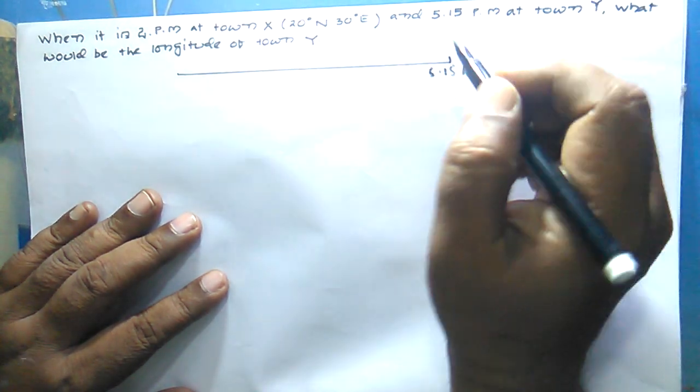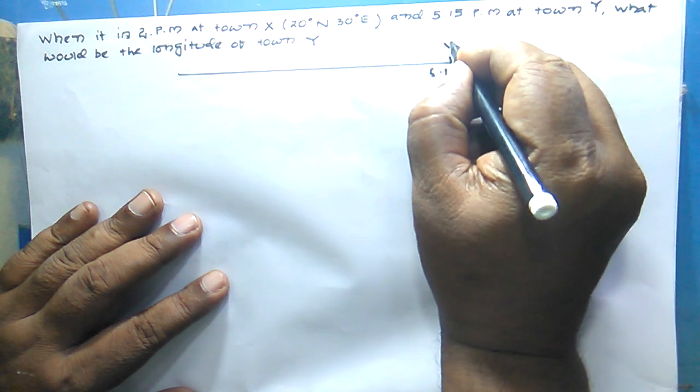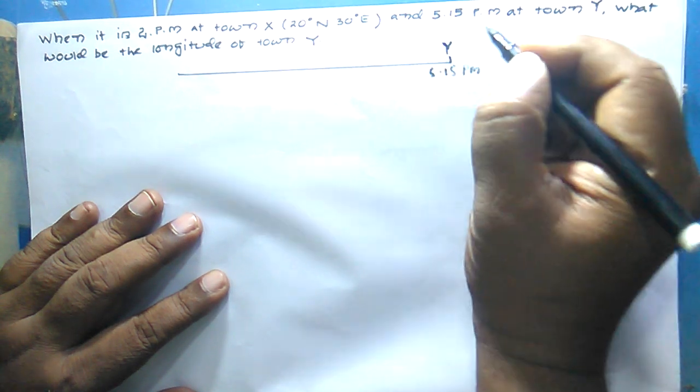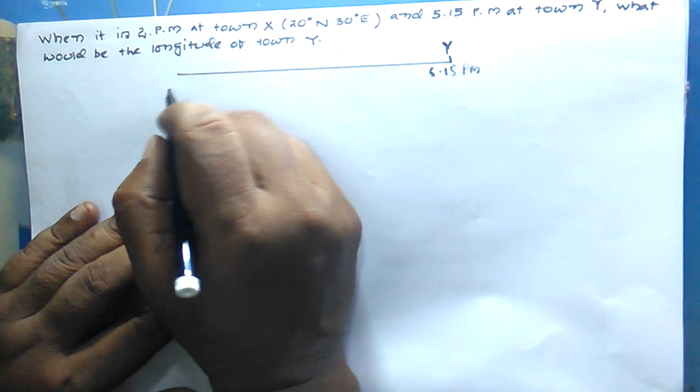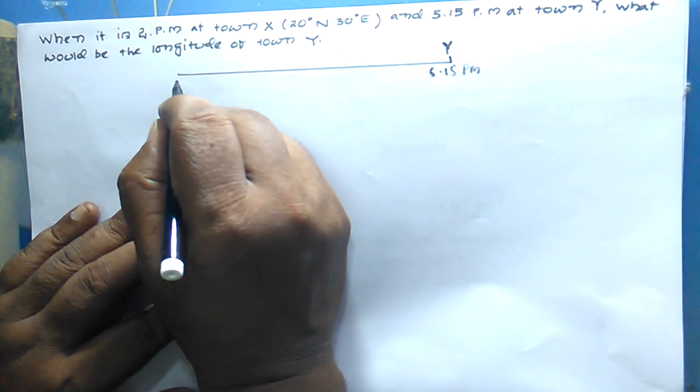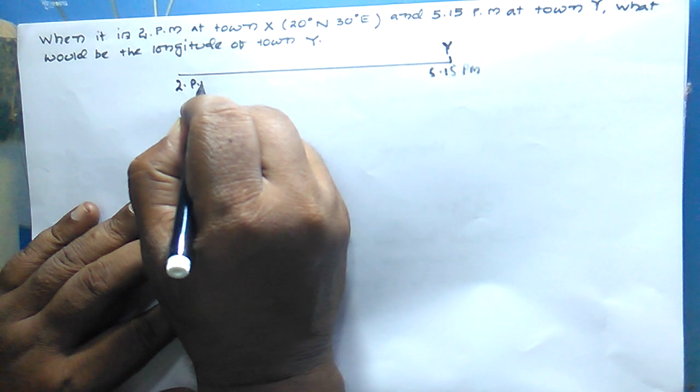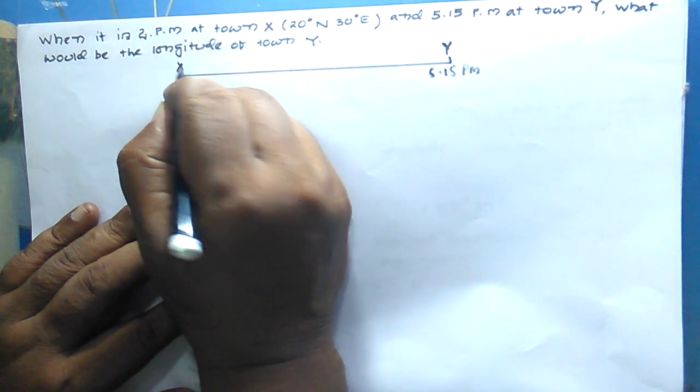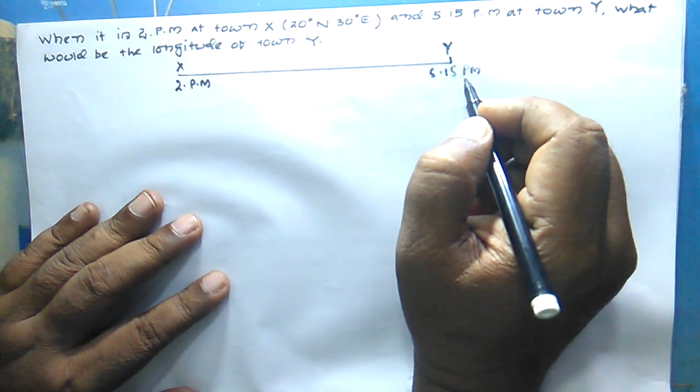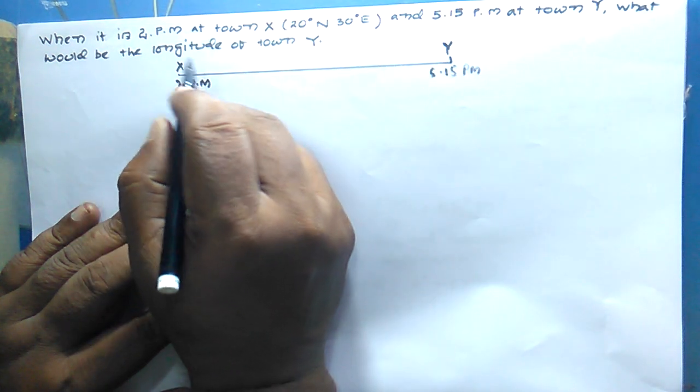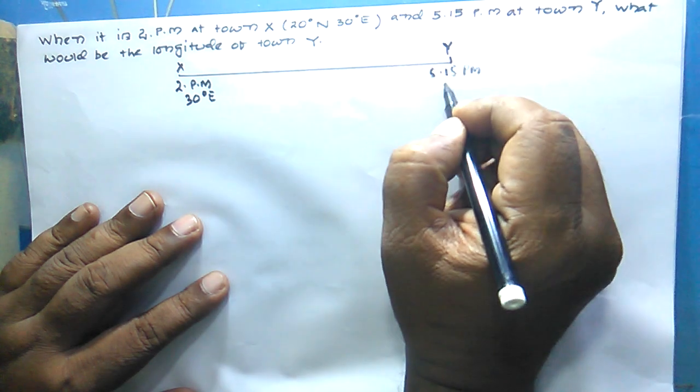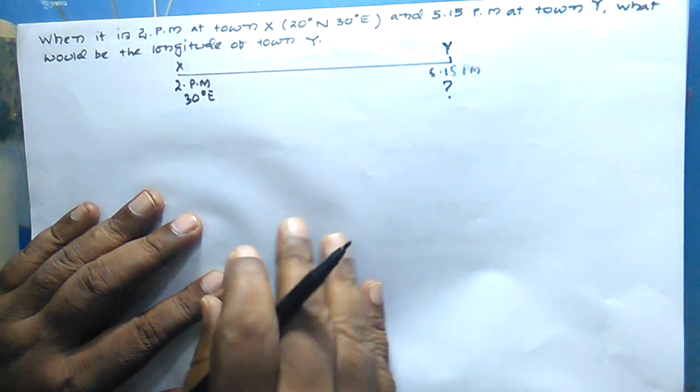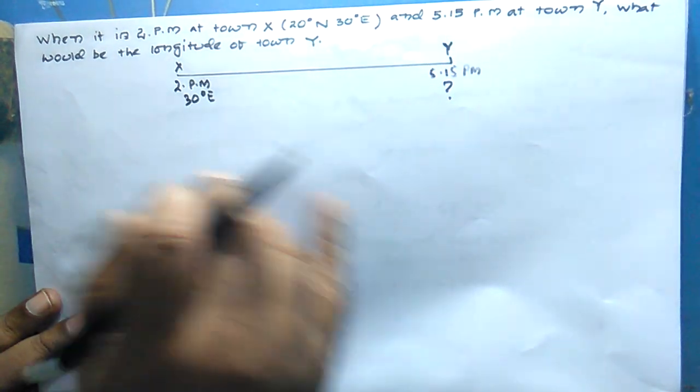5:15 p.m. is town Y, and 2 p.m. is town X. Obviously, X will be located to the west. The longitude of X is given as 30 degree east. We have to find out the longitude of Y.